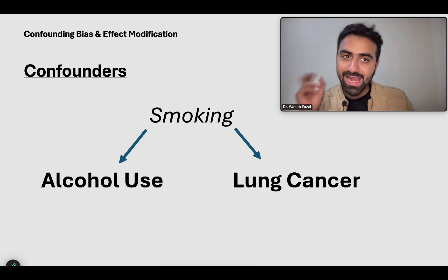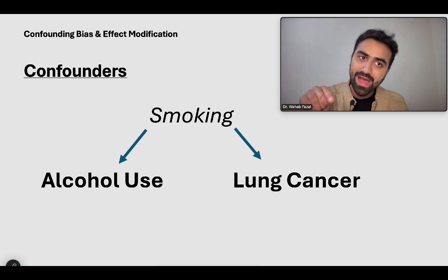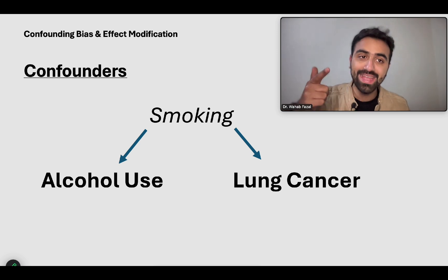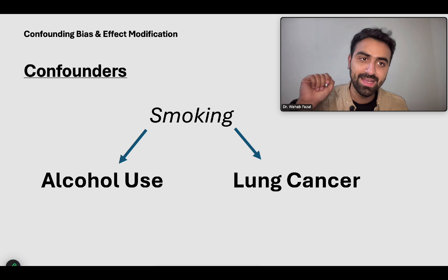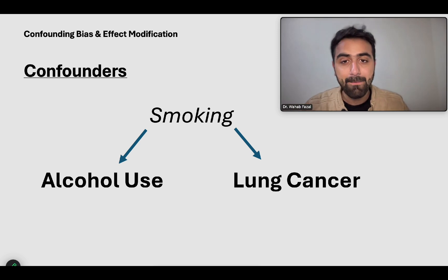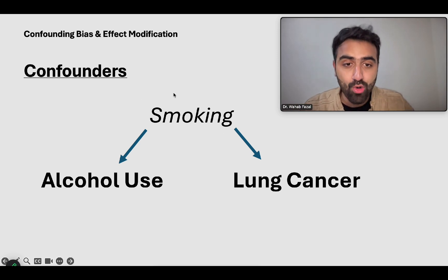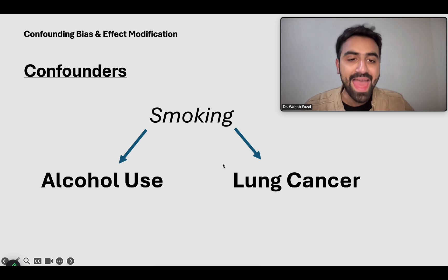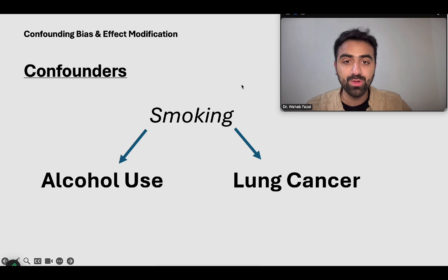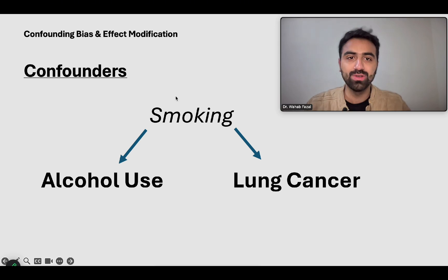The researcher assumed that somehow alcohol users are getting lung cancer. Well, that is true — alcohol users are getting lung cancer — but it's because they were also smoking. That third factor of smoking was hiding in front of our eyes somewhere in the background, and we didn't know. It was linked to both the exposure and the outcome. The third factor which explains the whole relationship.